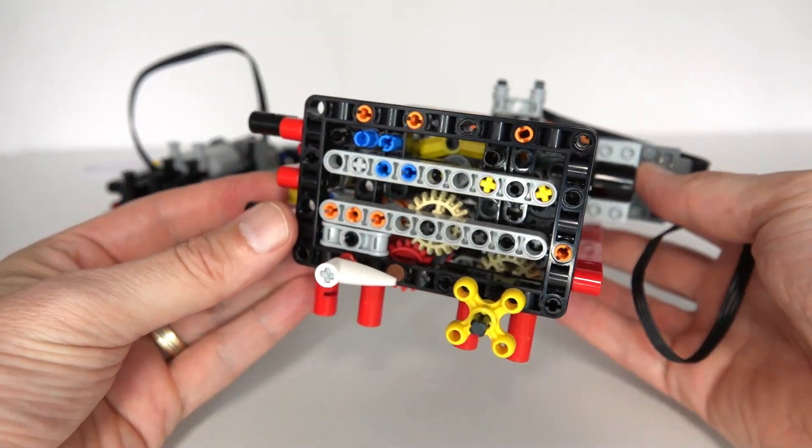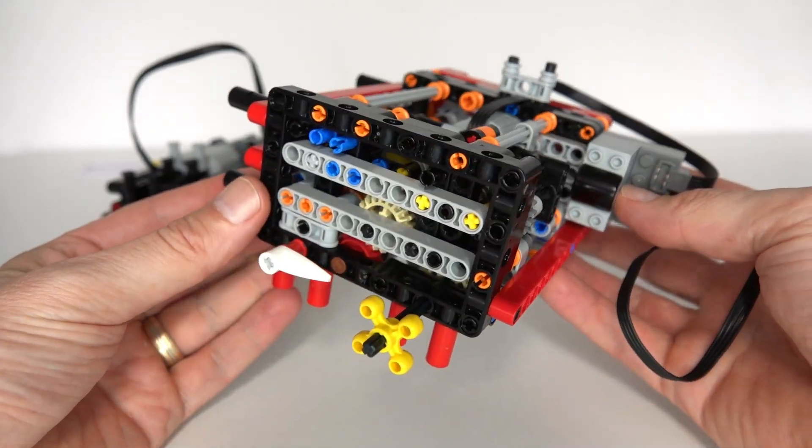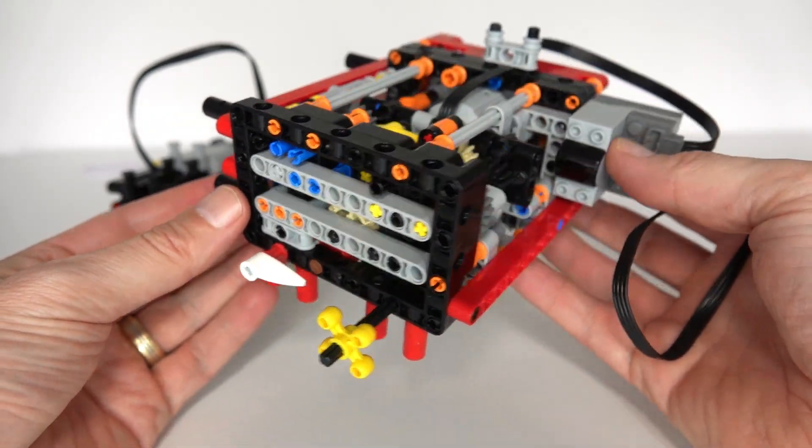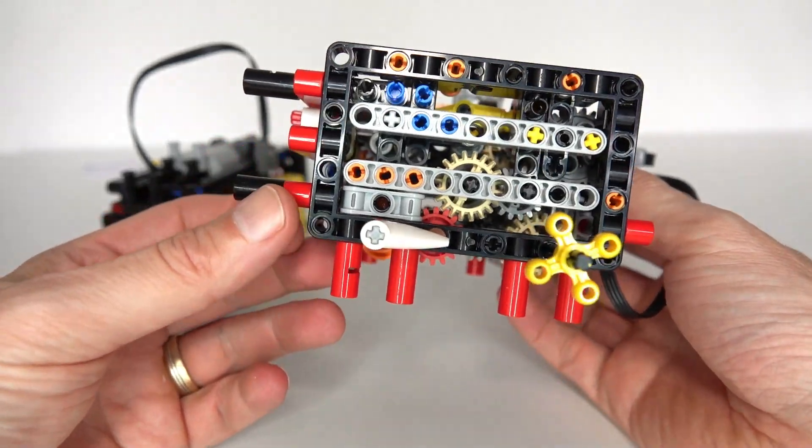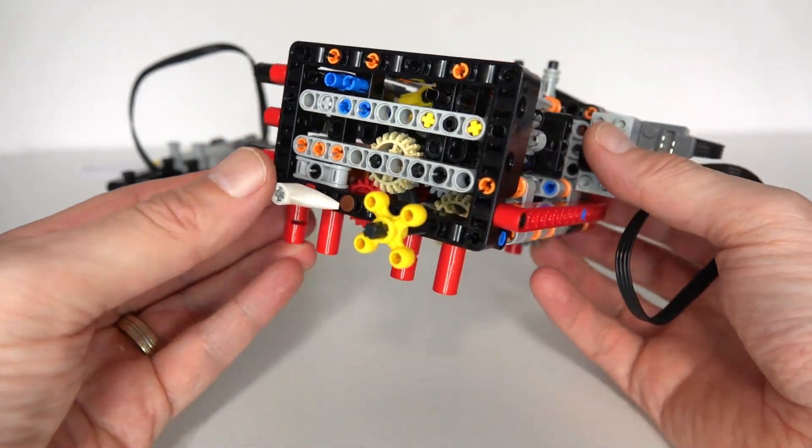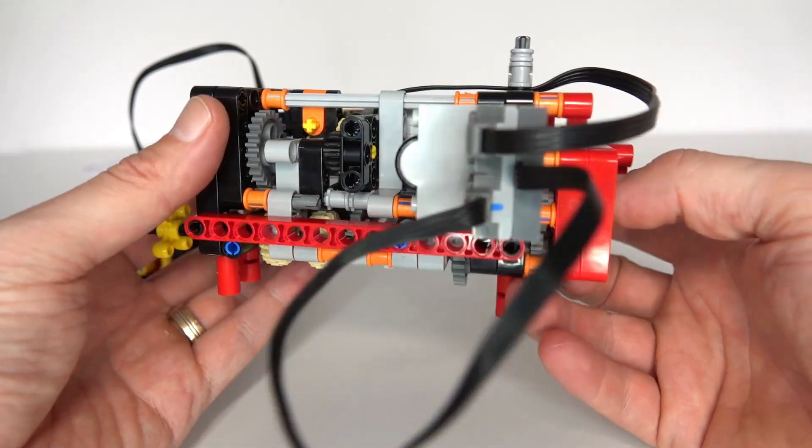How do you get a gearbox to implement more than one function using a single motor? The trick is to realize that a motor can go forwards and backwards. When the motor goes forwards you implement one function, when it goes backwards it implements a different function.